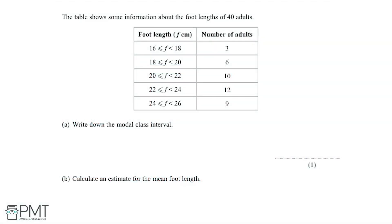The table shows some information about the foot lengths of 40 adults. Part A says we need to write down the modal class interval.